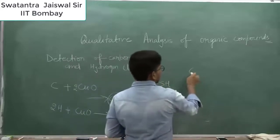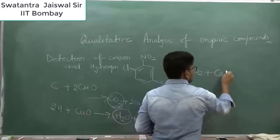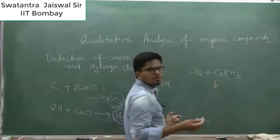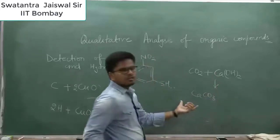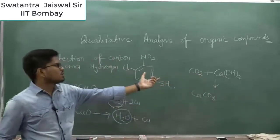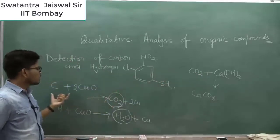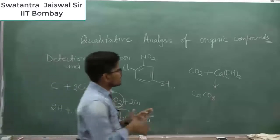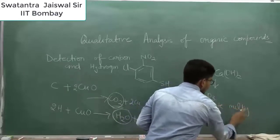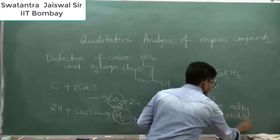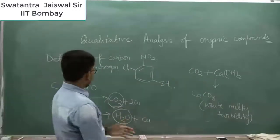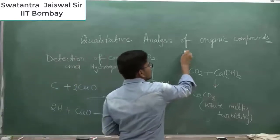To test for carbon dioxide, we add lime water — that is calcium hydroxide. CO2 + Ca(OH)2 → CaCO3. This gives a milky white turbidity, which confirms the presence of carbon dioxide and therefore carbon in the compound.